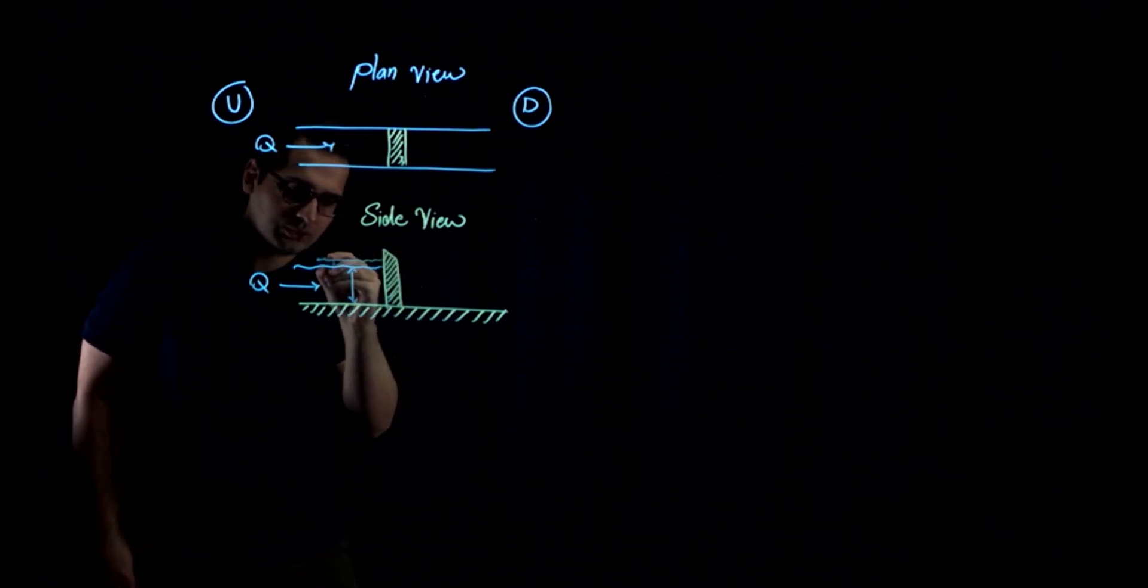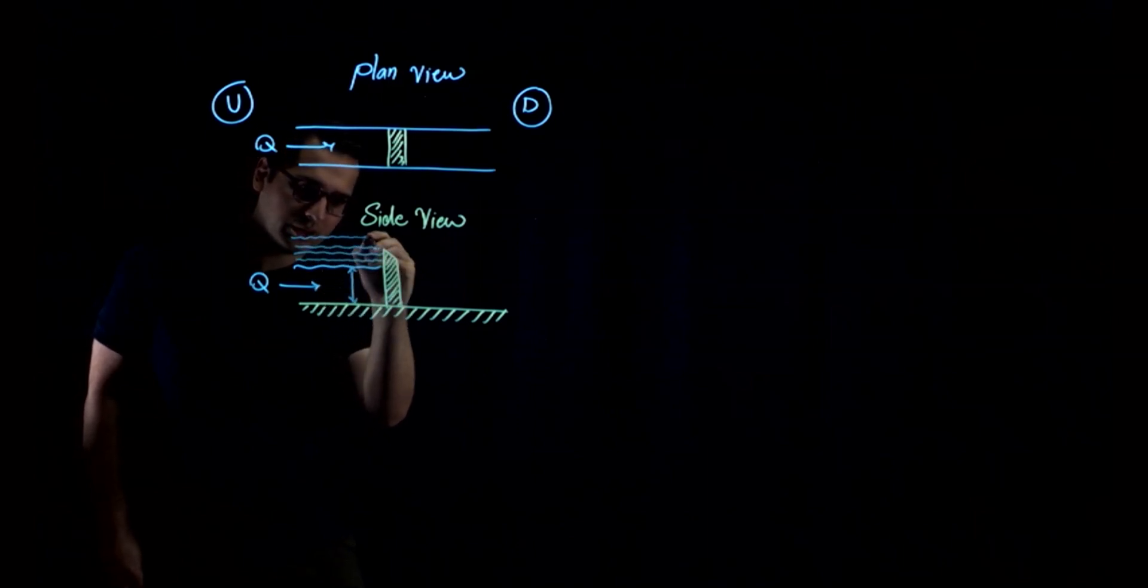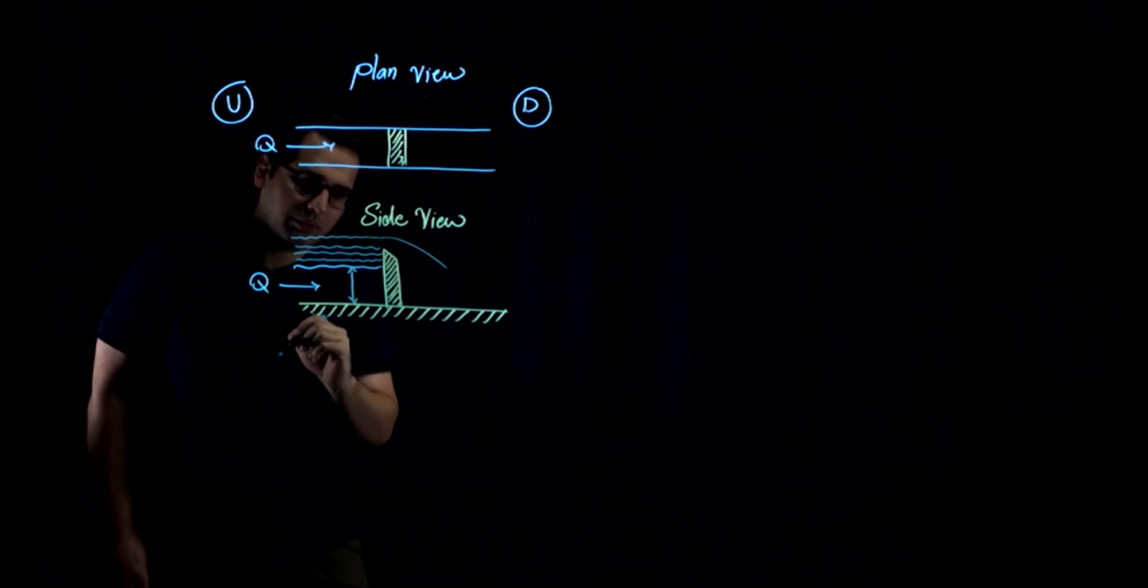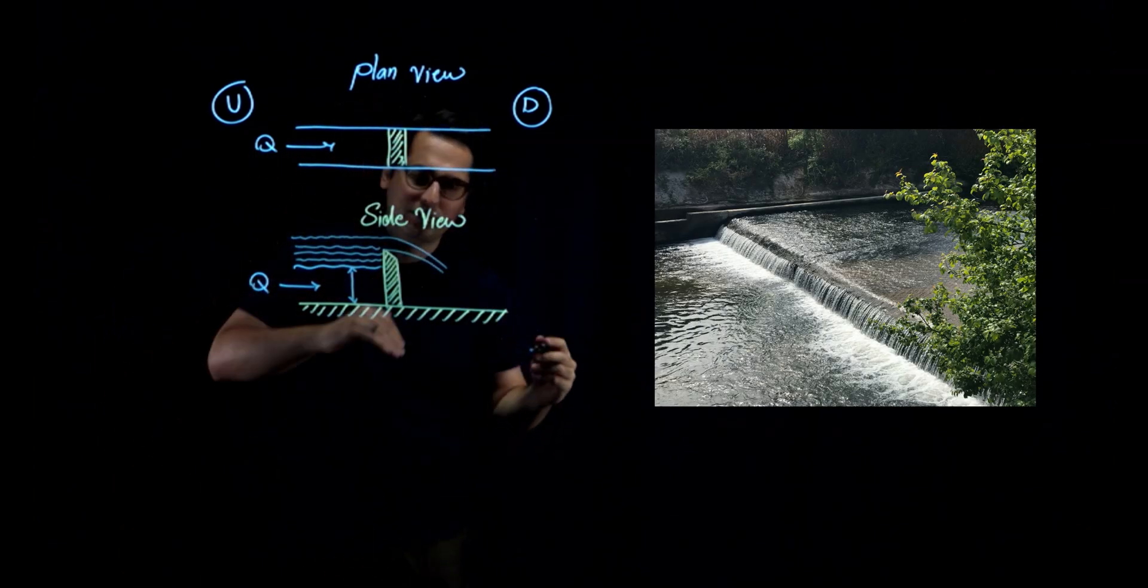So depth is going to increase slowly, going higher and higher and higher until the water can go past the weir. And there's going to be this shape of water jumping, essentially jumping over the weir.